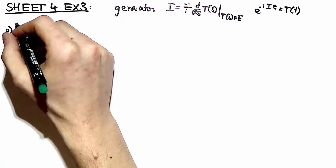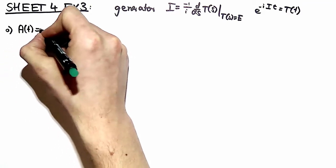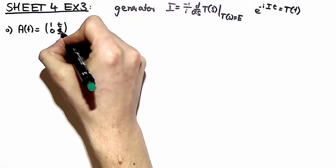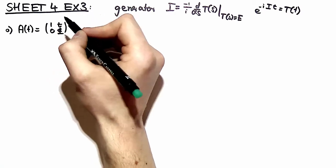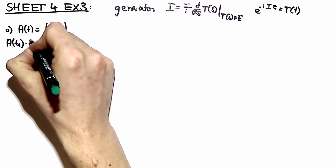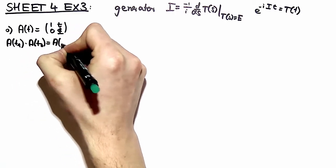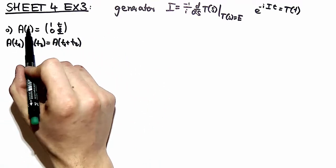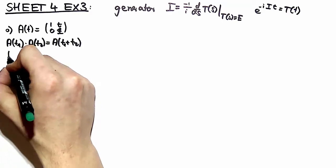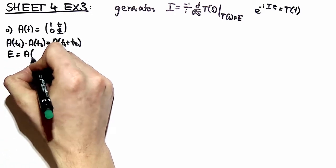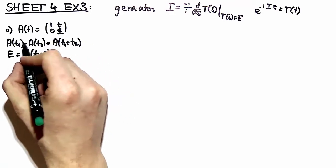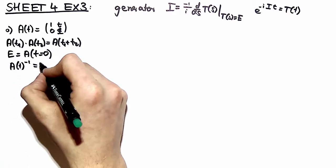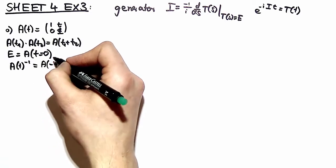In part A of exercise number 3, we define a matrix A(t) by taking the identity matrix with parameter t in the upper right corner. We have to show that this is a group, and yes it is. Through matrix multiplication, you can see that the sum of two matrices is still in the parameter space t of this representation. The identity element is defined by taking t equal to 0, and the inverse is just minus t.